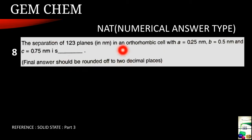Now this is a question from the solid state and you can refer for details in solid state part 3 video. Now the separation of 1, 2, 3 planes in an orthorhombic cell with A equals 0.25 nanometer, B equals 0.5 nanometer and C equals 0.75 nanometer is, and the answer should be rounded off to 2 decimal places. Now here interplanar distance is being asked for.